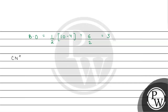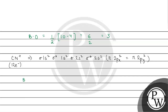Now for CN positive: carbon has 6 electrons, nitrogen has 7, giving 13. Due to the positive sign, one electron is removed, so 13−1 = 12 electrons. Configuration: sigma 1s², sigma* 1s², sigma 2s², sigma* 2s², pi 2px², pi 2py². Bonding electrons: 2+2+2+2 = 8. Anti-bonding: 4. Bond order = (8−4)/2 = 2.